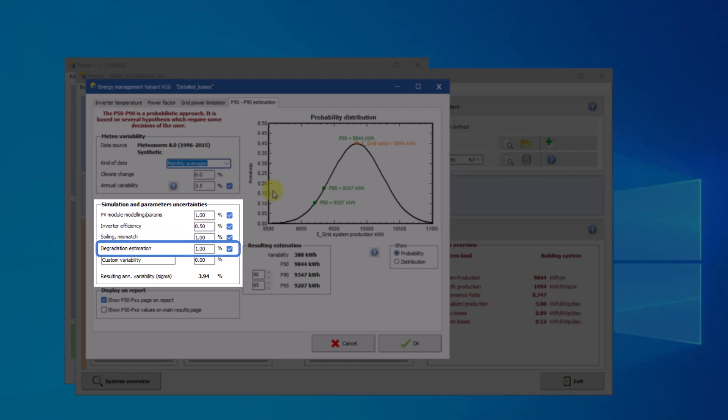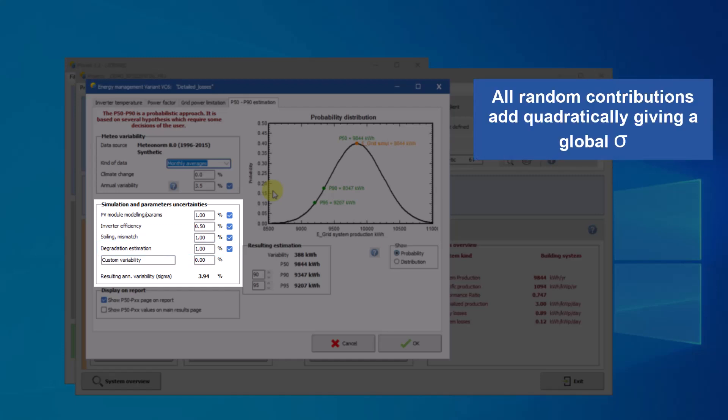We do not know how to handle this in the present time. All these random contributions will add quadratically, giving a global standard deviation, which may be applied for constructing the final Gaussian distribution function, and give estimation of the P90 or any of the P-indicators. This is for very special uses.